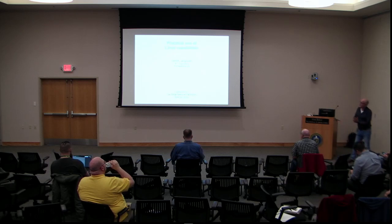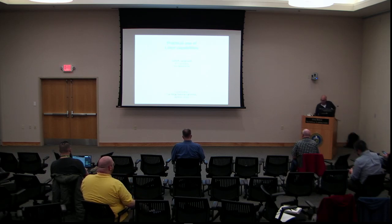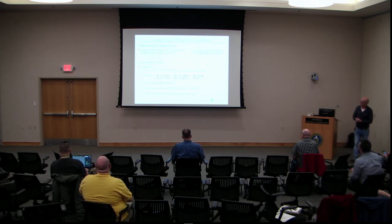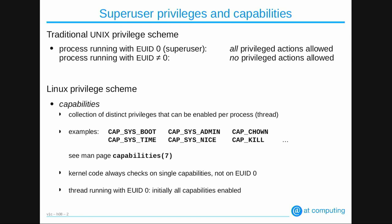The subject of today is practical use of Linux capabilities. If we look at the traditional Unix privilege scheme, we can see that if you are running with user ID 0, as a super user — usually root — then all the privileged actions are allowed. You can reboot the system, change the system clock, do all things. If you are not having user ID 0, then you have no privileges at all.